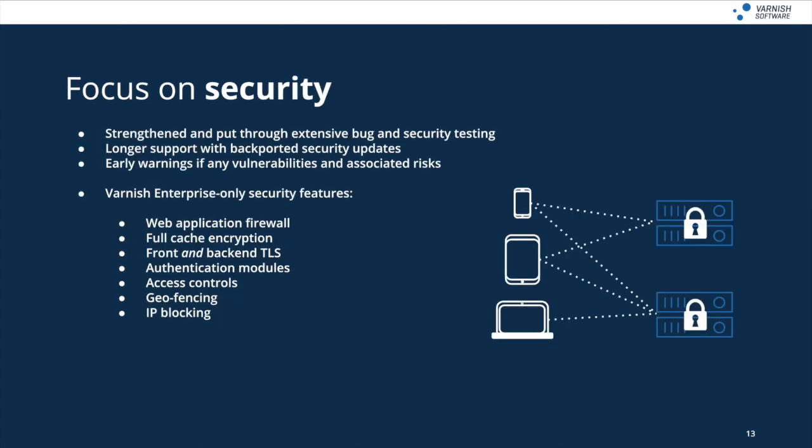There are also major differences in terms of security. Varnish Enterprise is put through extensive testing for bugs and security flaws, with longer support periods and backported updates. Varnish Enterprise users will also know about any vulnerabilities and associated security risks before the open source community. With support, SLAs and assurance, as well as benefiting from the stability of Varnish Enterprise releases, users can be more resilient and up to date with the latest security best practices. Additional security features include a web application firewall, full cache encryption, front- and back-end TLS, plus support for various authentication methods, access controls, geofencing and IP blocking to control access to content in a flexible and customizable way.